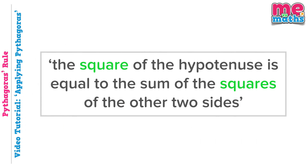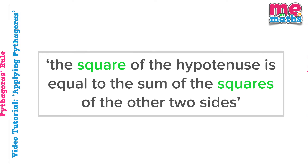Before we get started let's just remind ourselves of the rule. The square of the hypotenuse is equal to the sum of the squares of the two other sides, and don't forget this rule is only for right angled triangles.